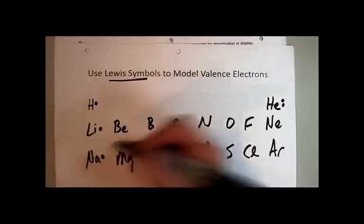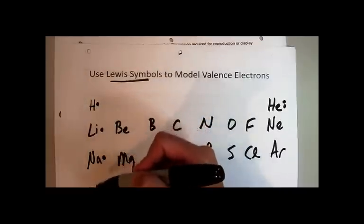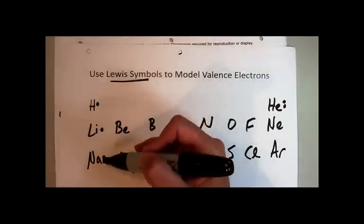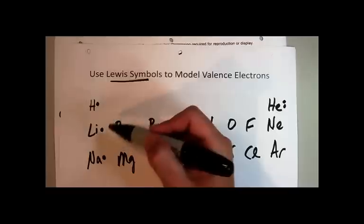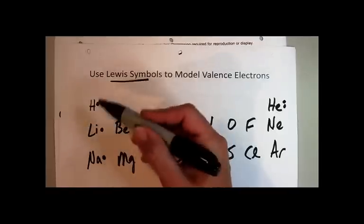The Lewis symbols look very similar—just the one dot. That tells me this is going to behave chemically very similar to the others in the same group. Beryllium has two, magnesium has two.